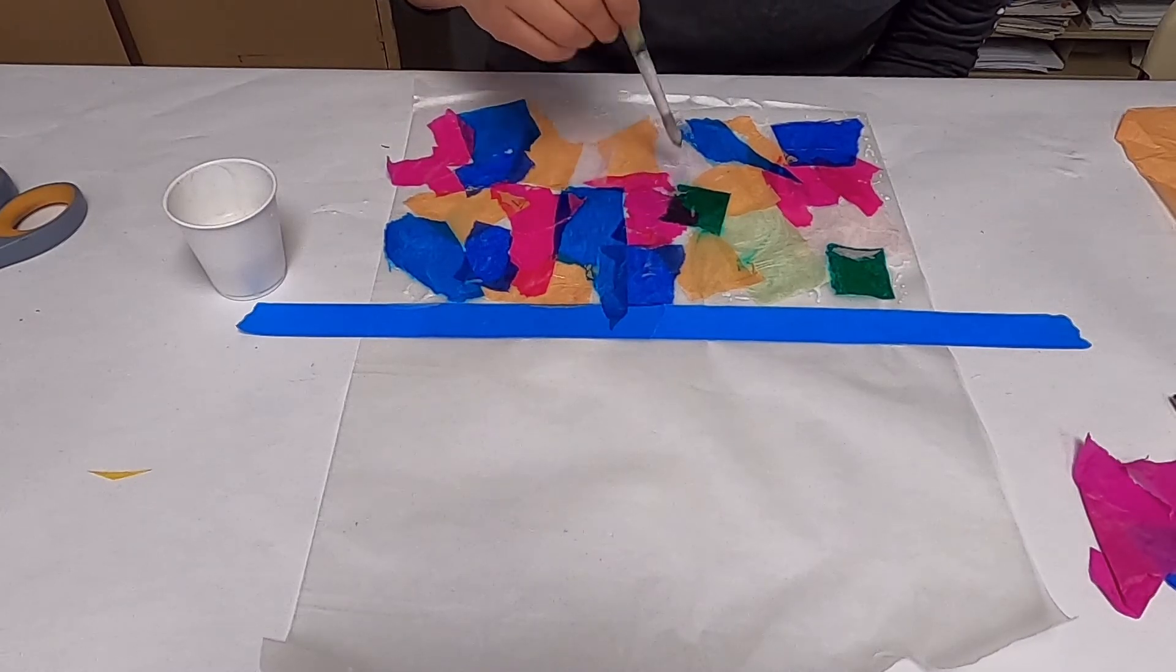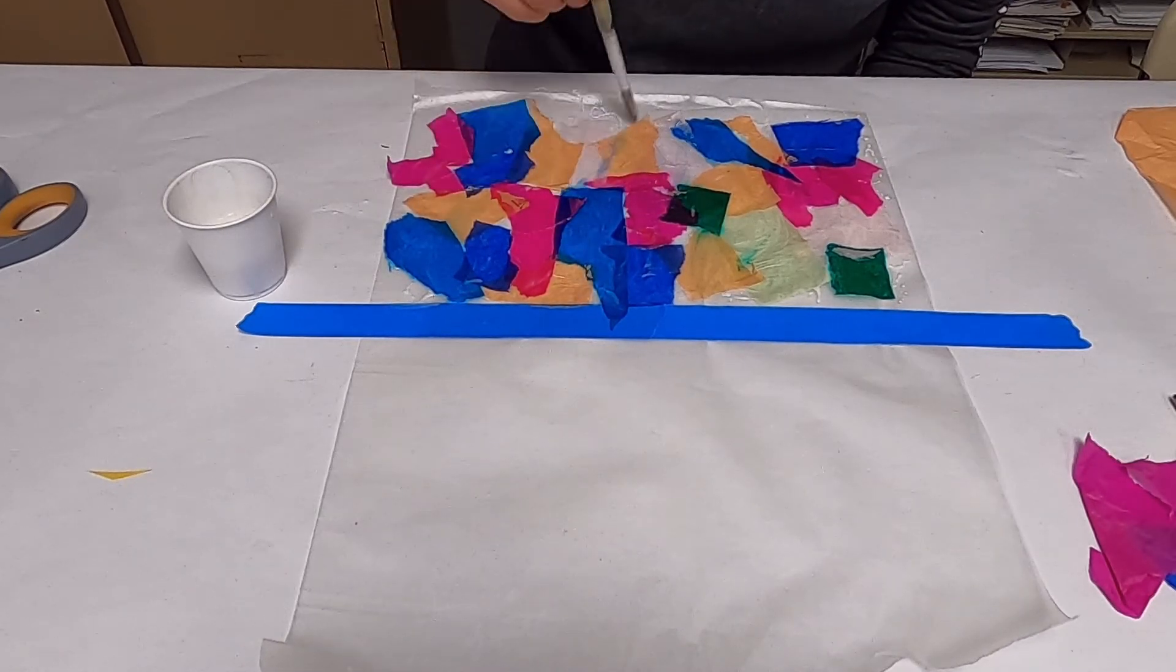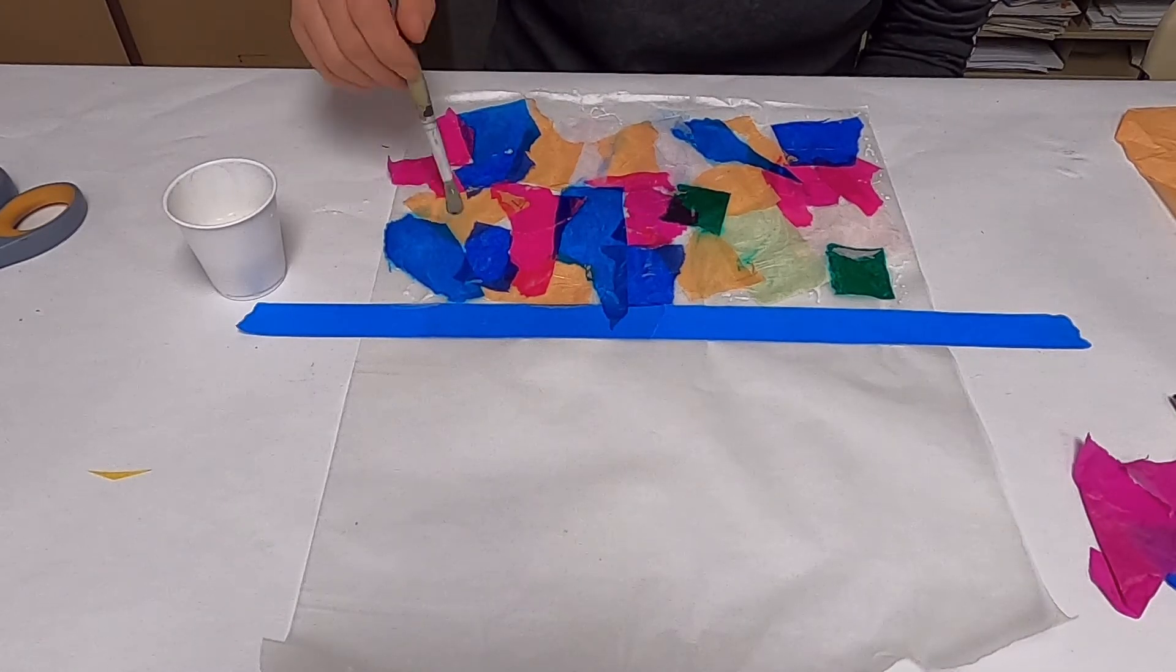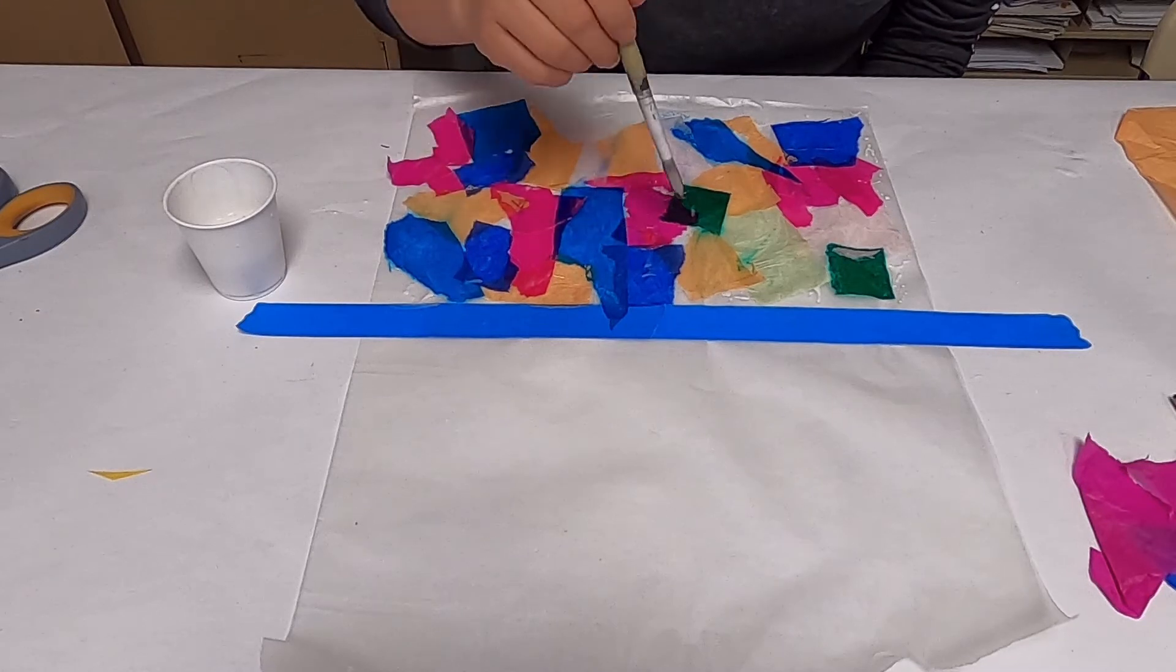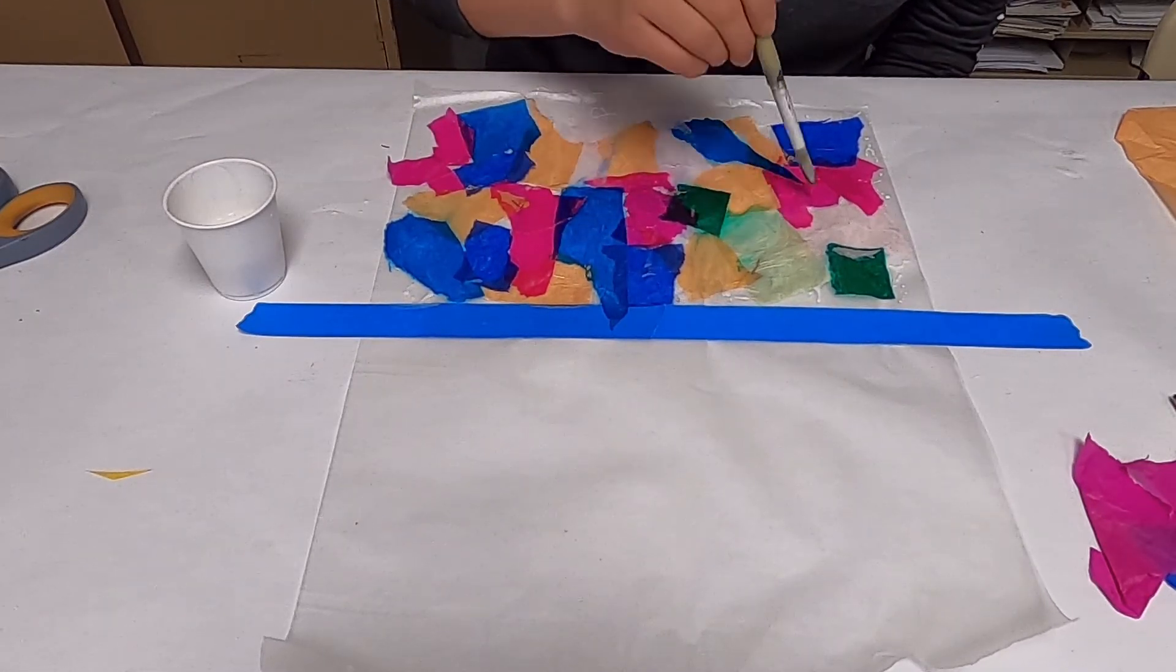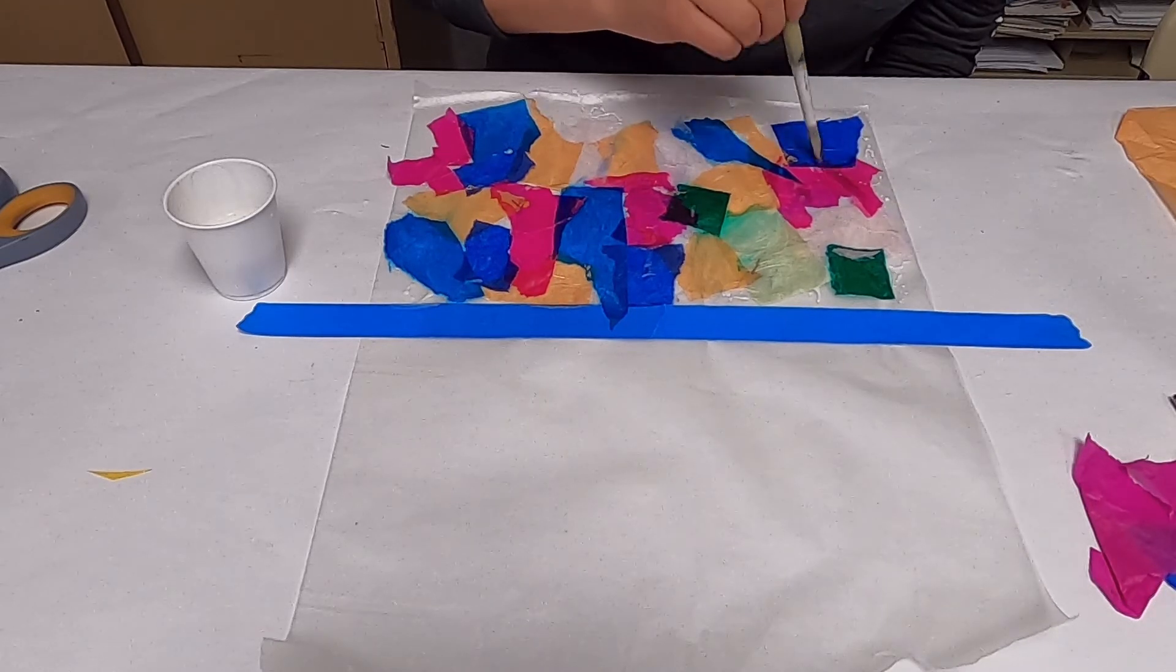It looks like a big gooey mess right now, but we want it nice and wet. See how the colors are bleeding together? That's okay - we like that look because it makes it look like stained glass.